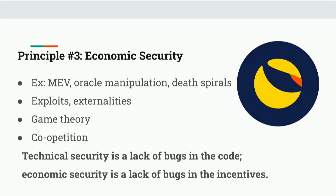Oracle manipulation — like we saw with the prices of assets on Aave and Mango Markets last year — is another example of an economic security exploit where the code was followed to a T, but the economics, game theory, and design were manipulated to hurt a group of users. Death spirals, as we saw with Terra Luna last year, are a third example. An externality is an unintended consequence to a group of users not responsible for that consequence — like Stepn, where they had a large supply incentivizing users to participate, but weren't matching that supply with any demand.